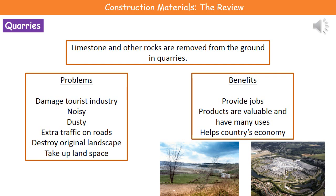Finally, we need to consider how we actually get these rocks. Limestone and the other rocks we're going to use are removed from the ground in things called quarries. There are some benefits to having quarries in that they provide jobs, usually in countryside areas where there may not be many jobs. The products they generate are valuable, have many uses, and because we can sell those products, it helps the country's economy.